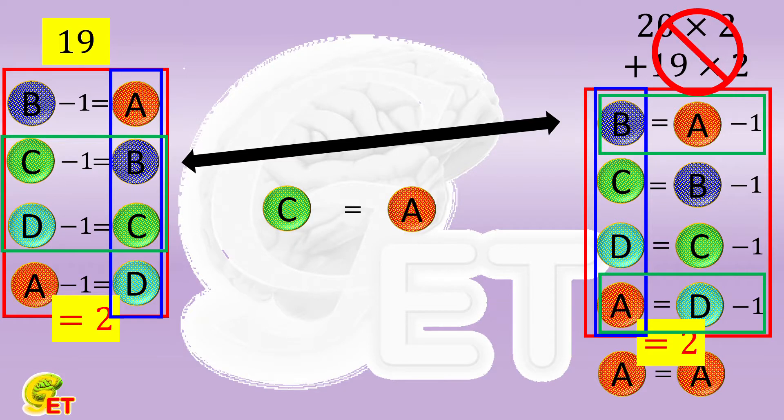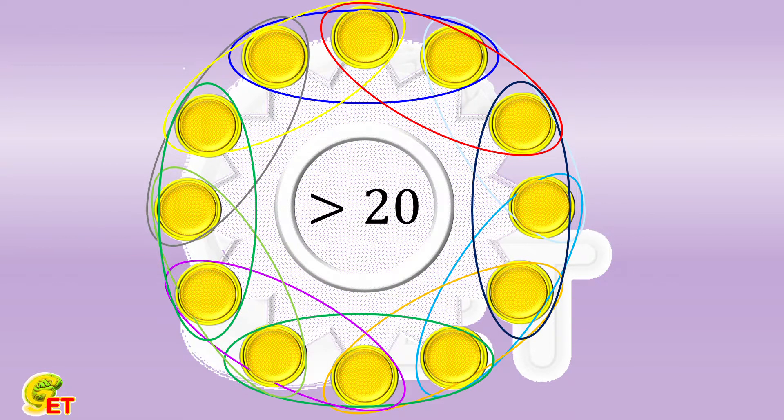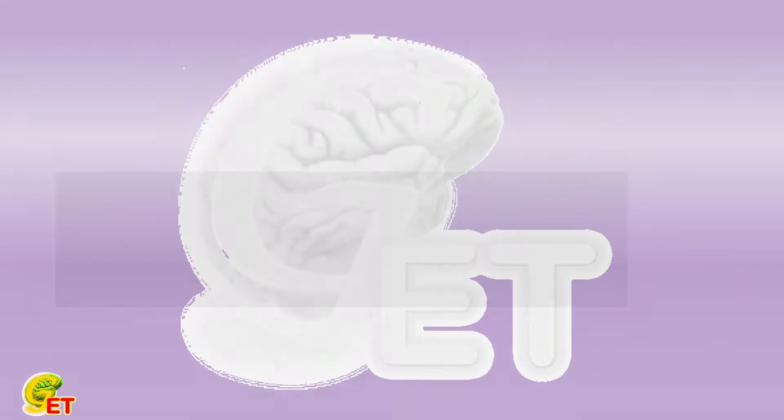To sum up, there is no solution that can make the summation of any three consecutive numbers not bigger than 20. Thank you for watching, and see you next time. Bye bye.